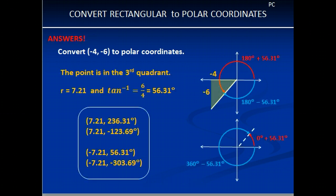Okay, here are the answers. If you have to convert (-4, -6) to polar coordinates, you're going to end up first in quadrant 3. It's in the third quadrant. So we find our r with Pythagorean theorem. It's going to be 7.21. Our inverse tangent of theta is going to be 6 over 4. You don't have to worry about the negatives. And that's going to give us 56.31 degrees.